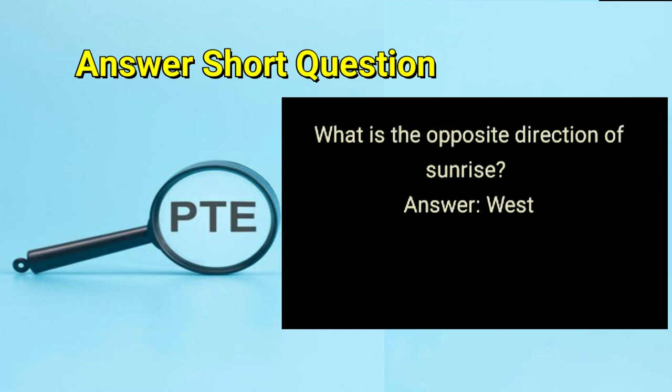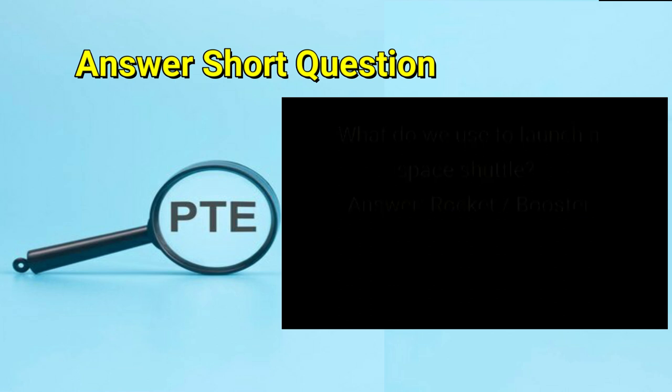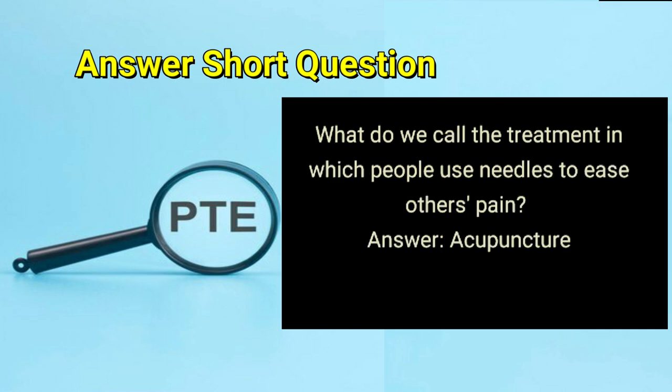What is the opposite direction of sunrise? Answer: west. What do we use to launch a space shuttle? Answer: rocket or booster. What do we call the treatment in which people use needles to ease others' pain? Answer: acupuncture.